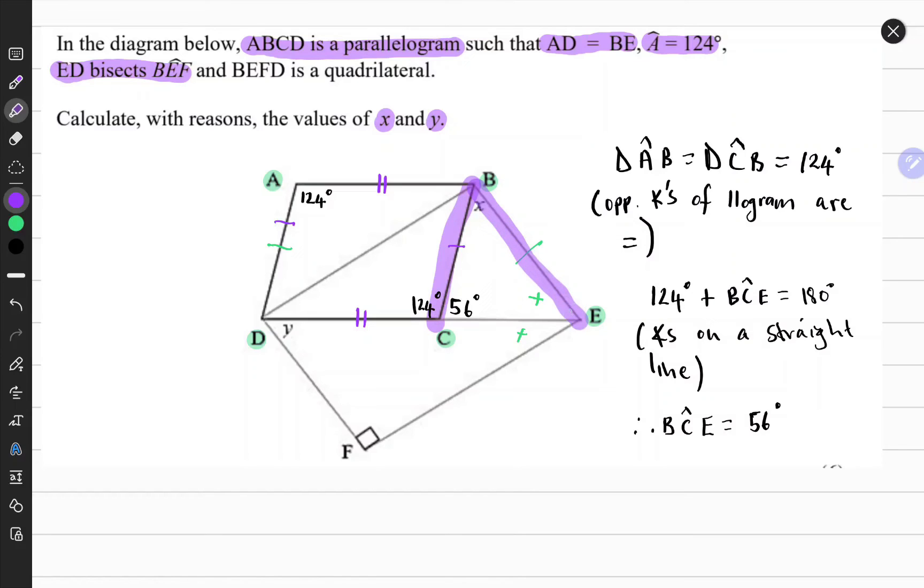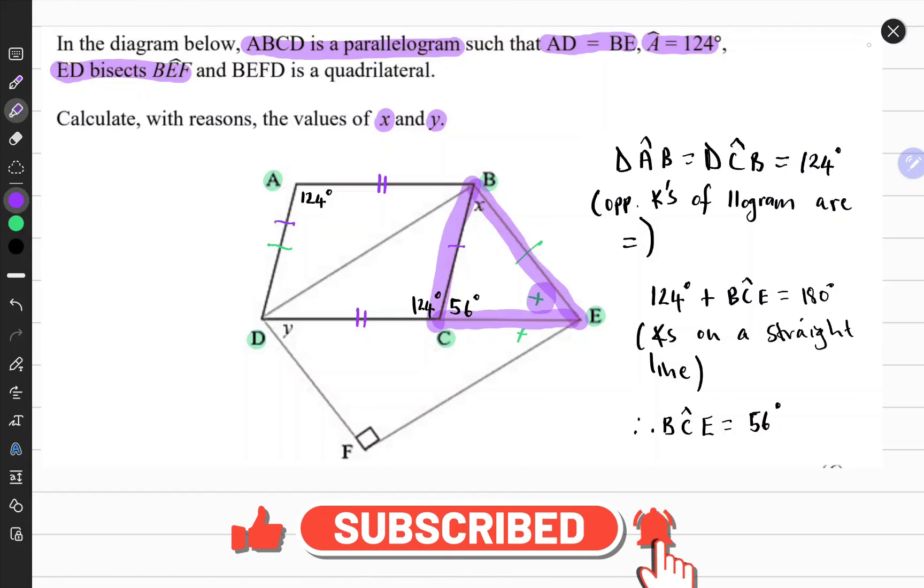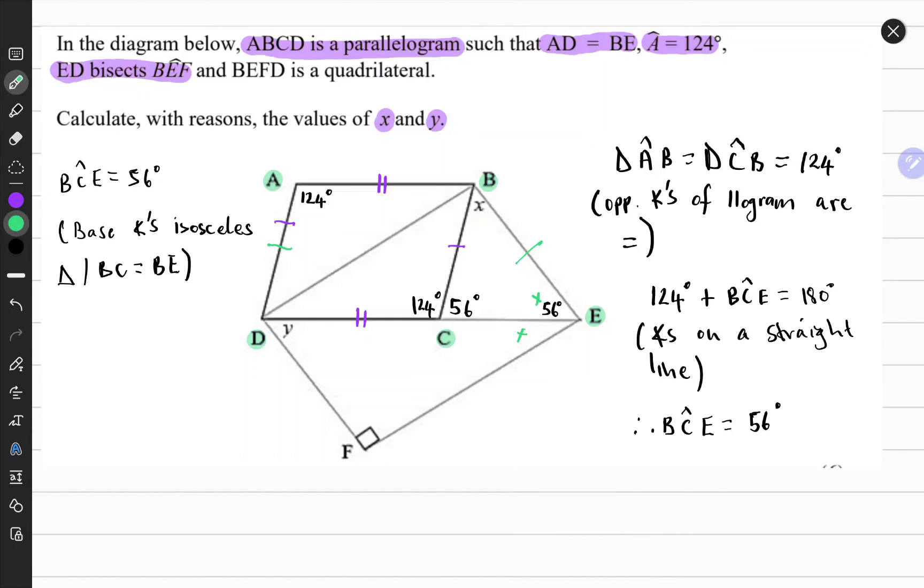Notice that these two line segments BC and PE are equal in length in triangle BCE, so what we have here is an isosceles triangle. It would mean that this angle here should also be 56 degrees because base angles in an isosceles triangle are equal in size.